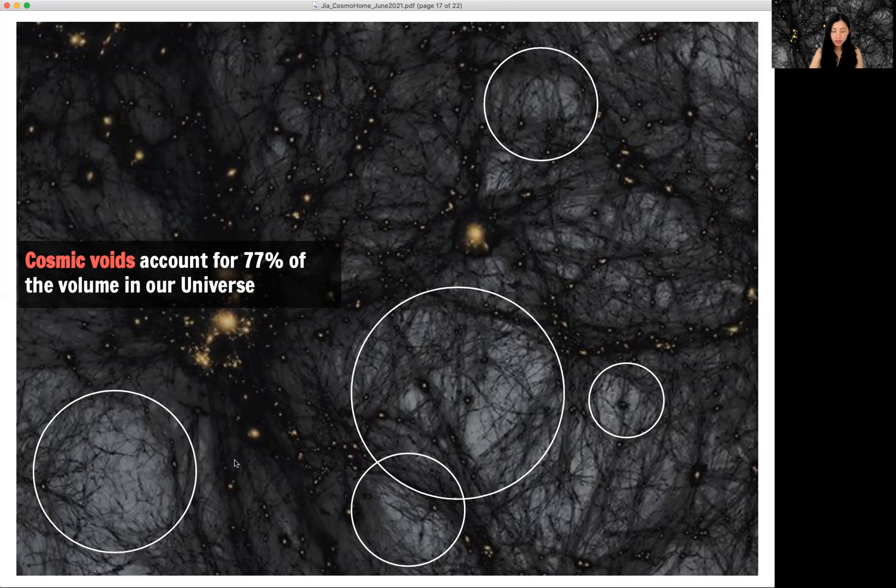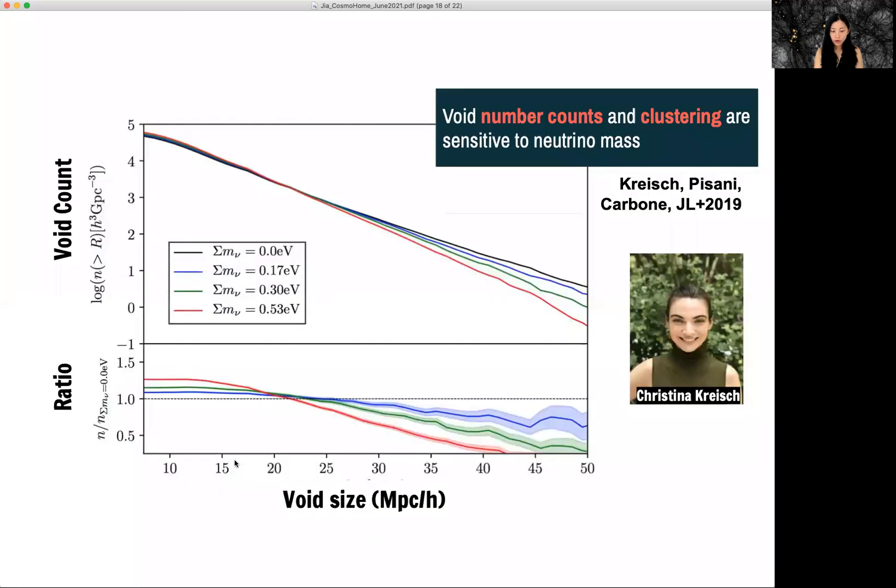They're interesting because the size of typical voids are comparable to the free streaming scale of neutrinos, which is typically 100 megaparsec. Voids, they can have different size varying from a few megaparsecs to tens of few tens of megaparsecs.